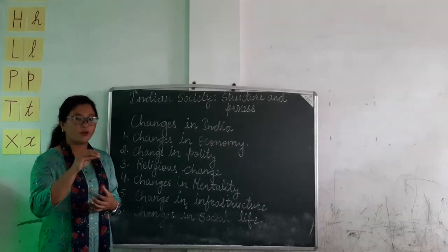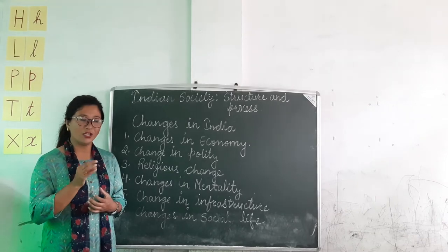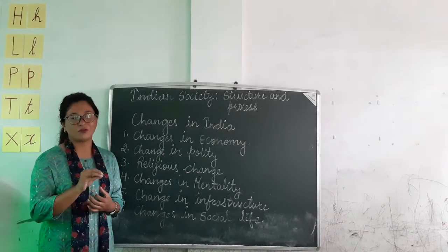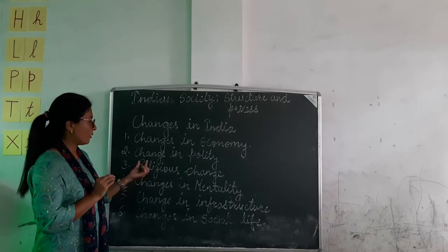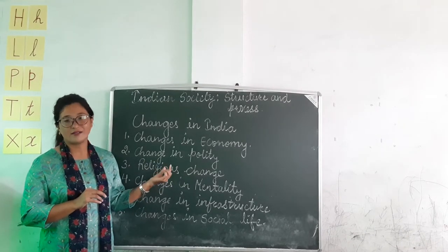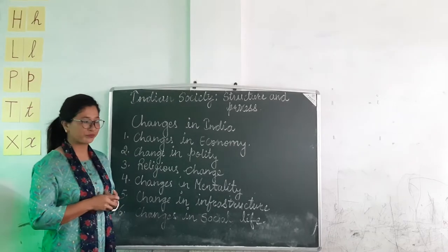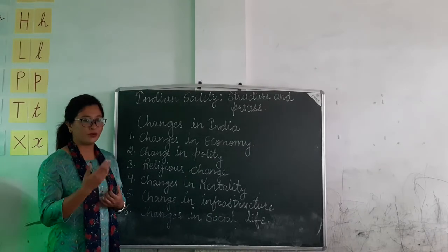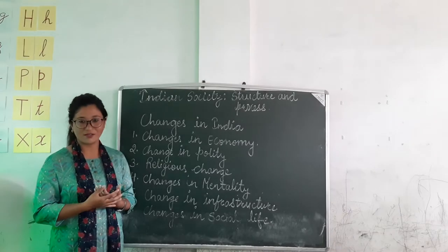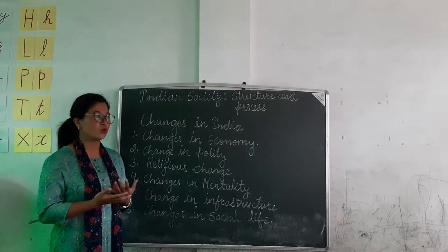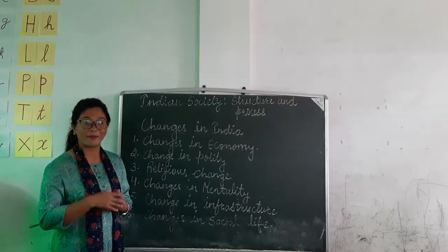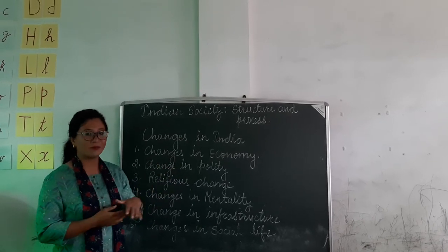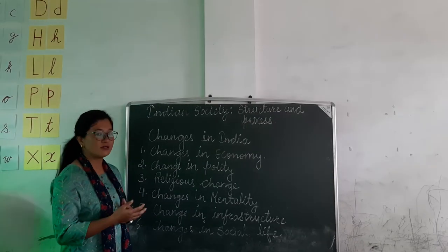Next is change in polity — that means politically the rules changed. In pre-British India, there were only kings — Raja, Maharaja, Monarchs, etc. — and people mostly lived within their villages. Later on, after independence, we came to know about democracy, enactment of laws, courts, police, etc. There were changes in the ruling system as well.